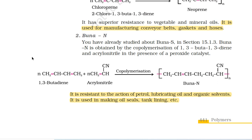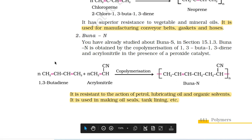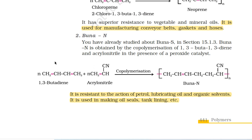Second, Buna-N. Buna-N is obtained by the copolymerization of 1,3-butadiene and acrylonitrile in the presence of a peroxide catalyst. 1,3-butadiene (CH2=CH-CH=CH2) plus acrylonitrile (CH2=CHCN) undergo copolymerization to give Buna-N. It is resistant to the action of petrol, lubricating oil and organic solvents. It is used in making oil seals, tank linings, etc.